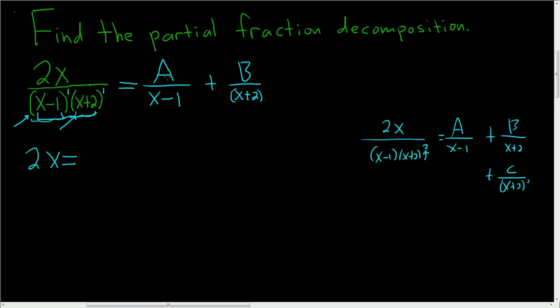Now when you multiply A over x minus 1 by both of these terms, the x minus 1 cancels, so you're left with A times (x plus 2). And when you multiply this by all of this, the x plus 2 cancels, so you're left with plus B times (x minus 1).